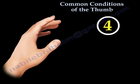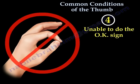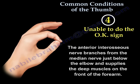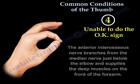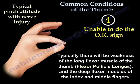Number four: unable to perform the okay sign due to anterior interosseous nerve injury. The anterior interosseous nerve comes from the median nerve just below the elbow and supplies the deep muscles on the front of the forearm. This is a typical pinch attitude seen with this nerve injury.